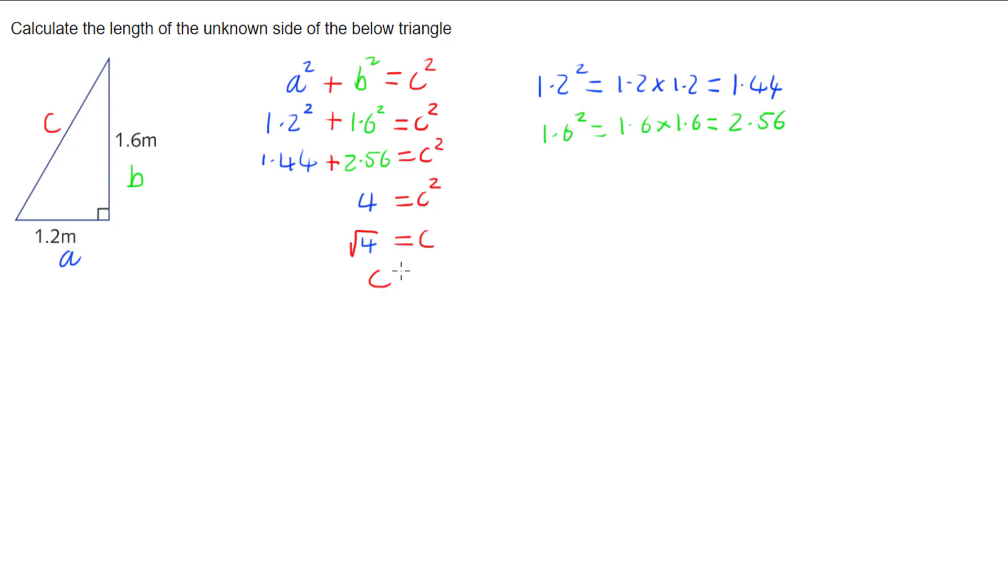And now we can write our answer. The side length C, our hypotenuse, is going to be 2, and we have units in meters, so 2 meters.